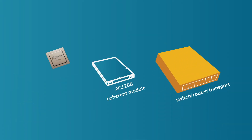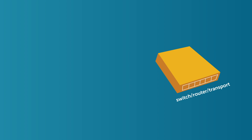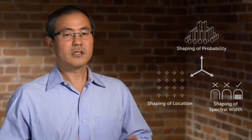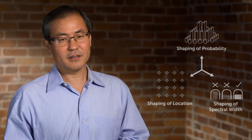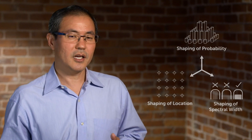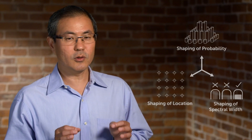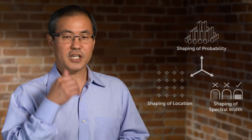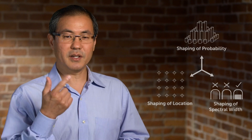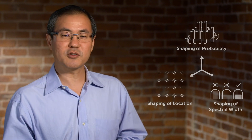3D shaping is a key feature in the recently introduced Pico-powered AC1200, a 1.2 terabit coherent transceiver module which supports two wavelengths up to 600 gig each. As the name implies, there are three elements to 3D shaping, each providing a real world benefit: shaping of probability, shaping of location, and shaping of spectral width.